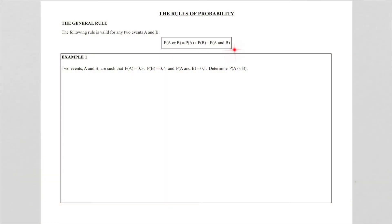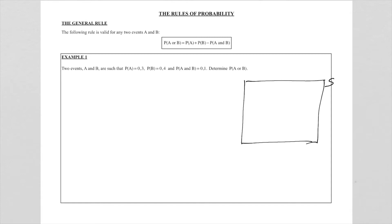Let's look at this general rule and add a few examples to see how we're going to use it. The general rule says that the probability of A or B is equal to the probability of A plus the probability of B minus the probability of A AND B. Now it is important that you understand where this rule is coming from. So when we think of a Venn diagram — that is our sample space and we've got two events A and B.